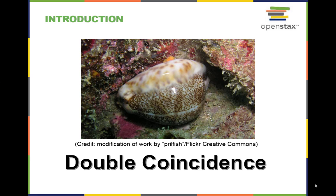Without currency, an orange grower that wanted a suit would have to wait for a suit maker that wanted to trade a suit for oranges. This concept is called the double coincidence of wants.